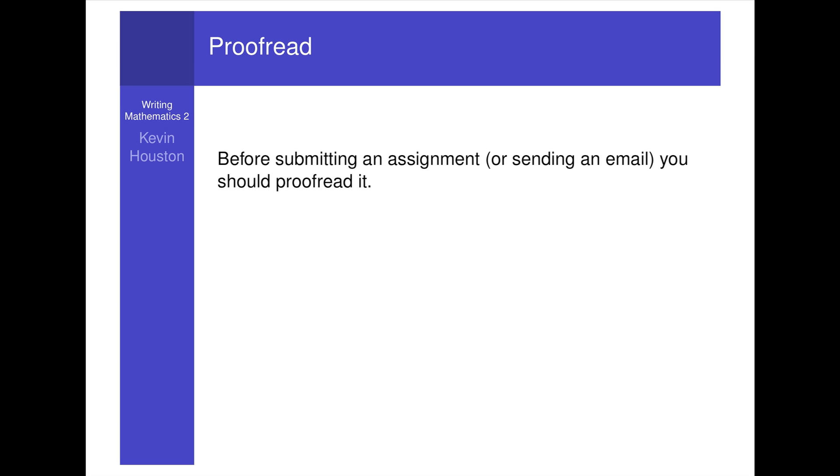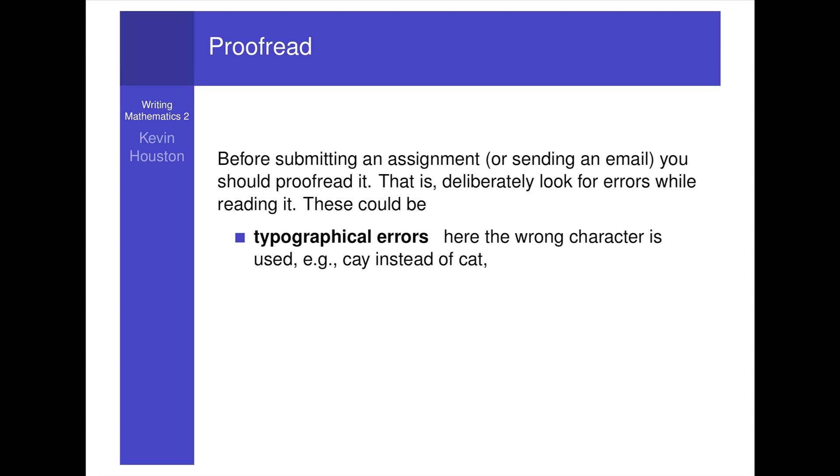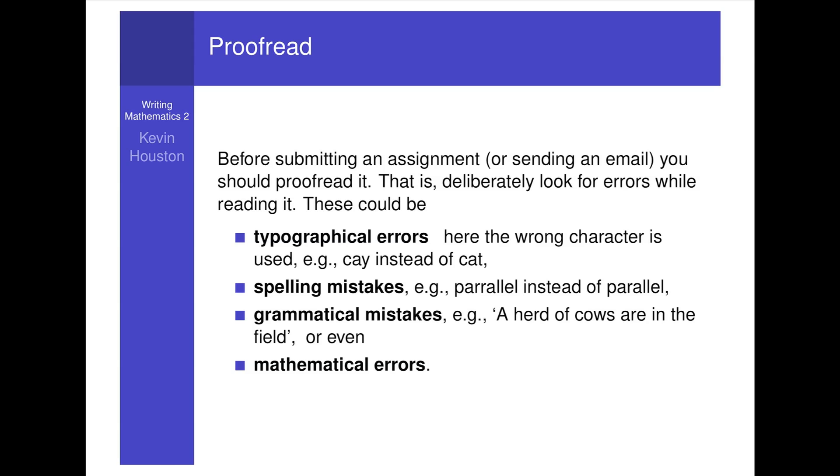Before submitting an assignment, or sending an email, you should proofread it. That is, deliberately look for errors while reading it. These could be typographical errors, also known as typos. Here the wrong character is used, e.g. K instead of cat. Spelling mistakes, e.g. Parallel instead of parallel. Grammatical mistakes, e.g. a herd of cows are in the field. Herd is singular. Or even mathematical errors.